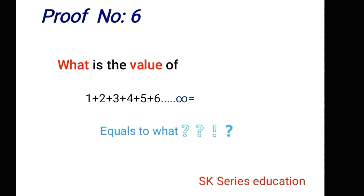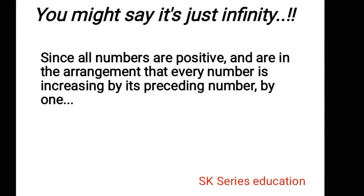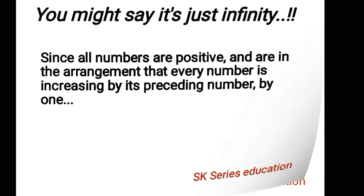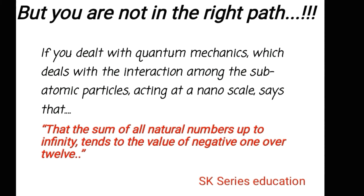Proof number six: what is the value of 1 + 2 + 3 + ..., that means the sum of all natural numbers tends to infinity, equals to what? You might say infinity since all the numbers are positive and in arrangement where every number is increasing the preceding number by 1. But you are not on the right path. If you dealt with quantum mechanics, which deals with the interaction among the subatomic particles acting at a nanoscale, it says that the sum of all natural numbers up to infinity tends to the value of -1/12.